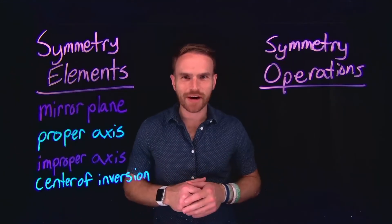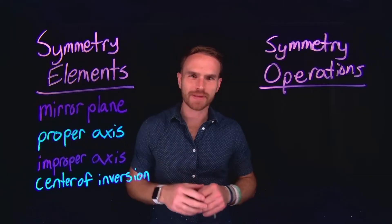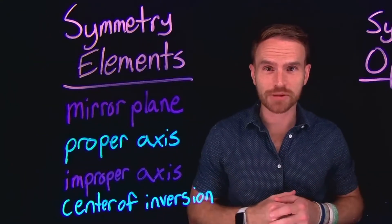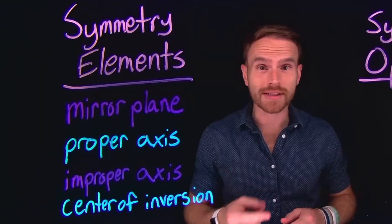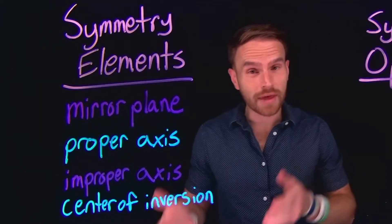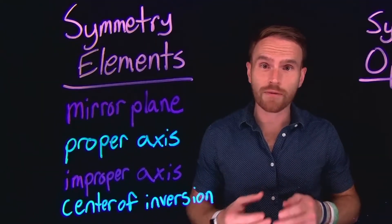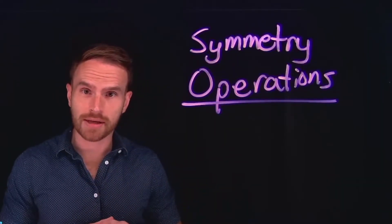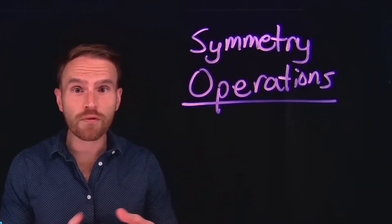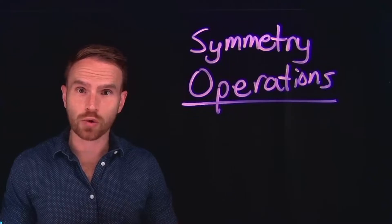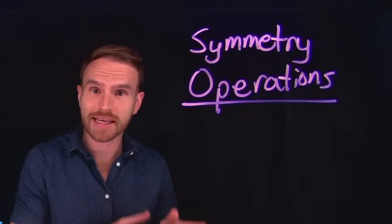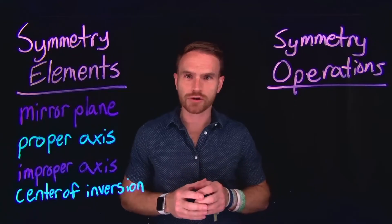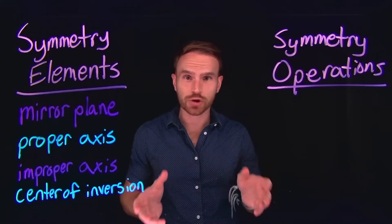Let's begin by identifying the differences between symmetry elements and symmetry operations. A symmetry element is some geometric object, like a point, a line, or a plane, that lies within a molecule and can be used to perform some sort of symmetry operation. A symmetry operation, on the other hand, is a movement or manipulation of a molecule that leaves it looking completely unchanged. Understanding these concepts is going to be integral to your understanding of symmetry and point groups.